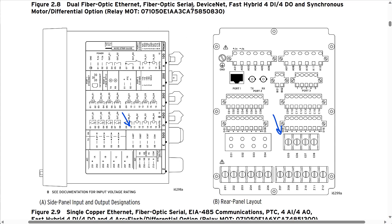We also have terminals Z01 through Z08, which are the current inputs used for other functions that involve current. These are your typical CT inputs. The key point is that the SEL-710 relay has dedicated differential current inputs E05 through E08, and all other protection elements using current operate off of the Z01 through Z08 terminals — at least for the part number shown here. So there are two separate CT input groups: E05 through E08 dedicated for the differential function, and Z01 through Z08 for all other current functions.